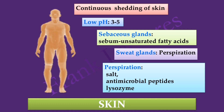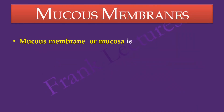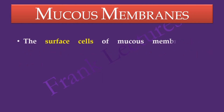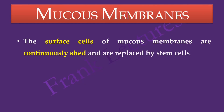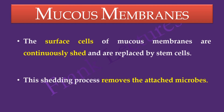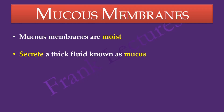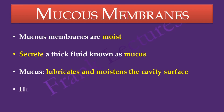Now let us see how mucous membranes contribute to the first line of defense. A mucous membrane, or mucosa, is a membrane that lines various cavities in the body and surrounds internal organs — that means it lines the respiratory, urinary, digestive, and reproductive tracts. An important feature is that the surface cells of mucous membranes are continuously shed and replaced by stem cells, removing attached microbes. Mucous membranes secrete a thick fluid known as mucus, which lubricates and moistens the cavity surface, and also traps pathogens and dirt which are then expelled from the body.